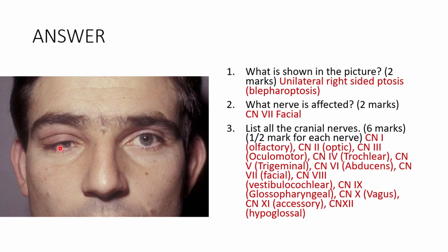On the right side of this person there is drooping of the upper eyelid — unilateral right-sided ptosis, also called blepharoptosis. You can also see that the skin markings and wrinkles are less prominent on that side. This indicates involvement of the facial nerve — cranial nerve VII.